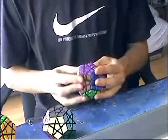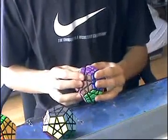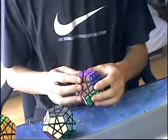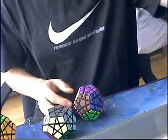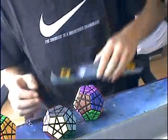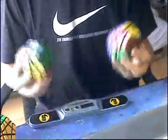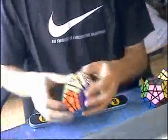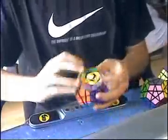Now for the right, up, right inverted, up inverted finger trick performed 6 times. I will do this to all of the cubes. The MF8 Megaminx first. 1.55 seconds.